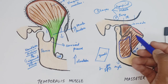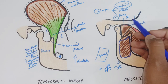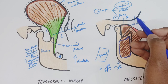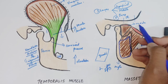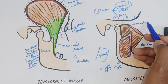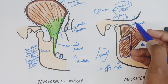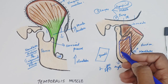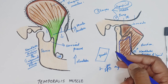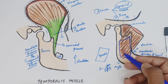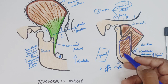The masseter muscle is a thick quadrilateral muscle with three layers — superficial, middle, and deep. The superficial layer arises from the maxillary process of the zygomatic bone and the anterior two-thirds of the zygomatic arch.